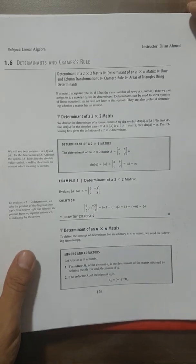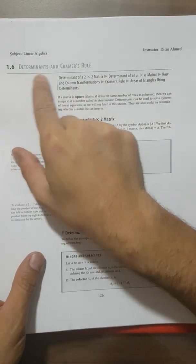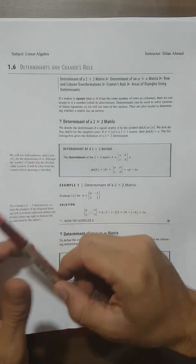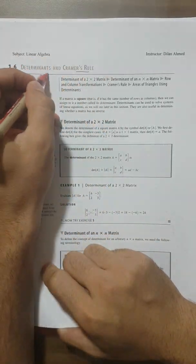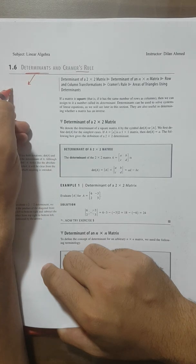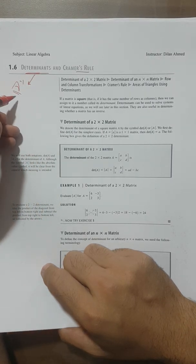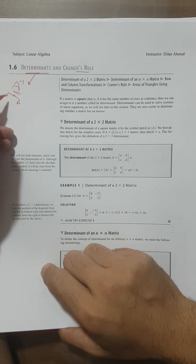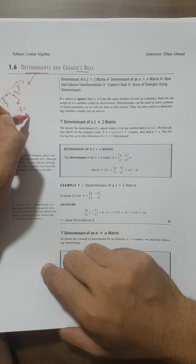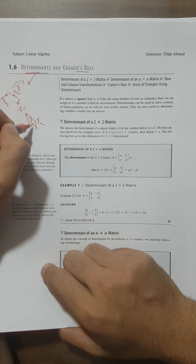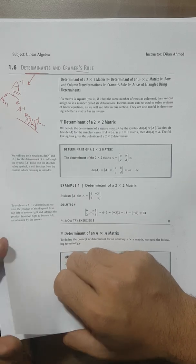We are in section 1.6, going to talk about determinants and Cramer's rule. Cramer's rule is another method for solving systems. The determinant is very important for the inverse — we have two important notes about a 3×3: how to find the inverse and whether the inverse exists, because not all matrices have an inverse. So we start with the determinant.